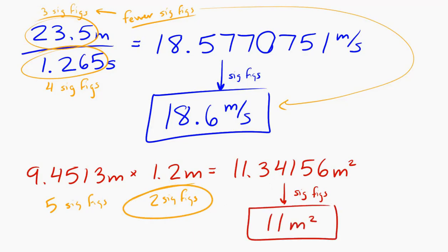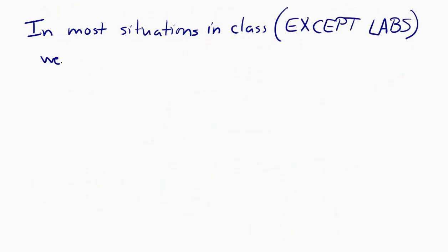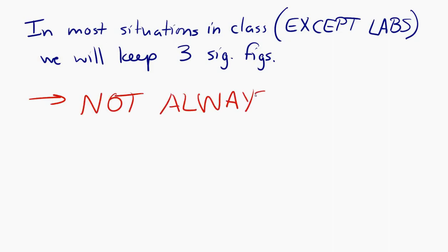So maybe that seems like it all makes your life way more complicated than it should be. The good news is, in most situations in this class, not including labs, but when we do practice problems, we will usually keep three significant digits. I can't promise that all the time, but usually a safe thing to do is to keep three significant digits. That's going to keep our attention on the physics, not on the details of digits.